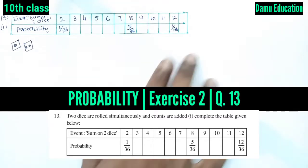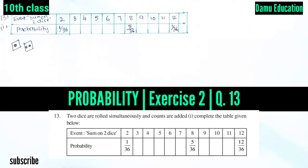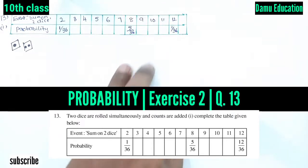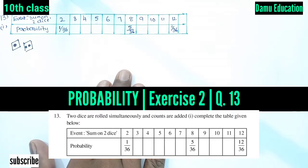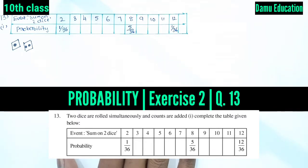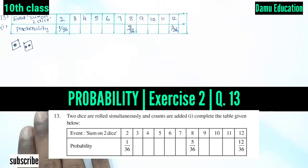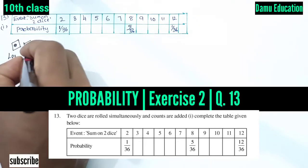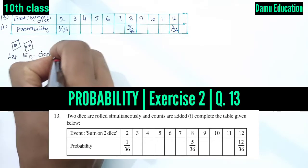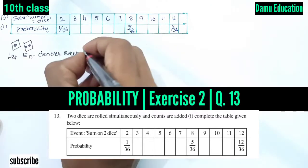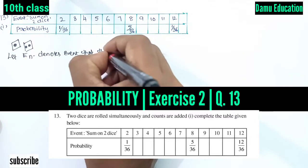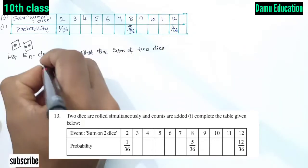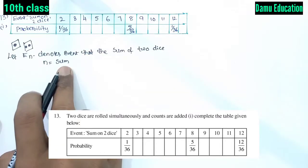Complete the following table given below. The event is: what is the sum on two dice — 2, 3, 4, 5, 6, 7, 8, up to 12. The probabilities for sums 2, 8, and 12 are already given. We are going to find all probabilities up to 12. Let En denote the event that the sum of two dice equals n.